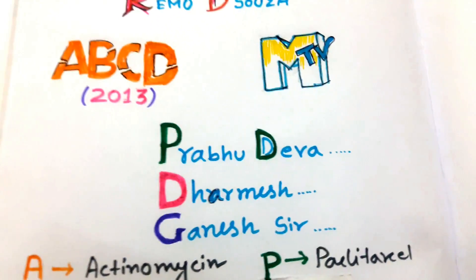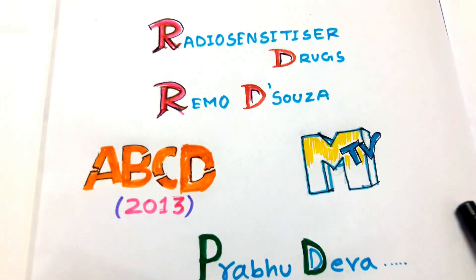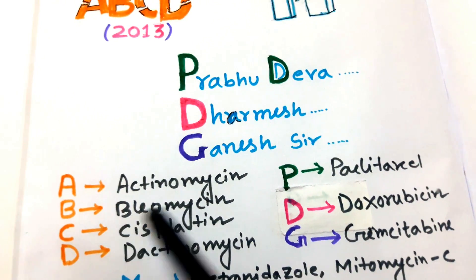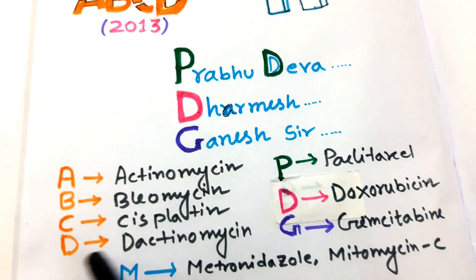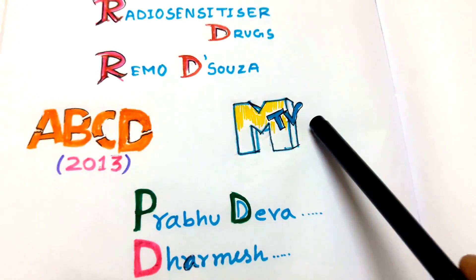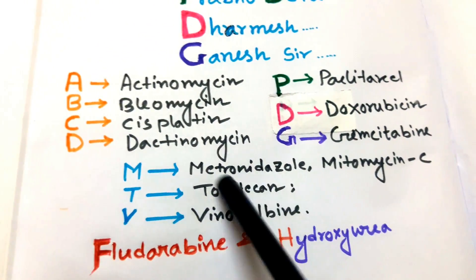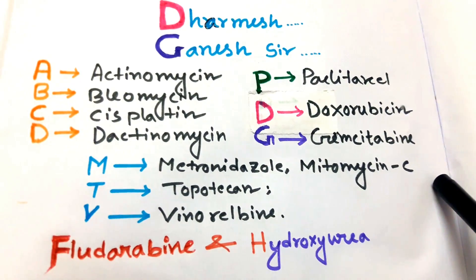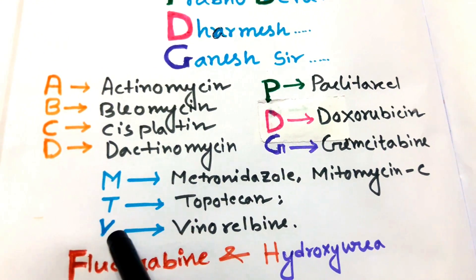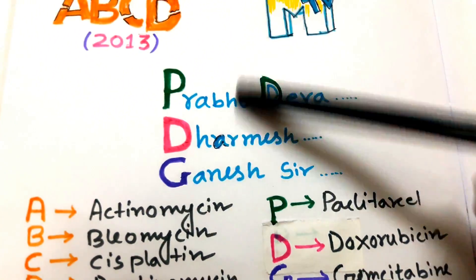For ABCD: A for actinomycin, B for bleomycin, C for cisplatin, and D for actinomycin (dactinomycin). For MTV: M for two drugs — metronidazole and mitomycin C; T for topotecan; and V for vinorelbine.